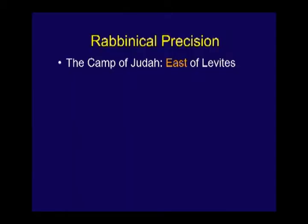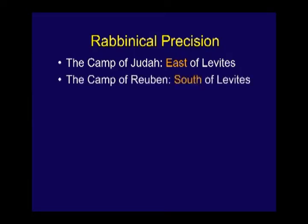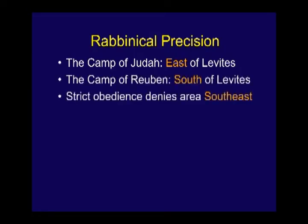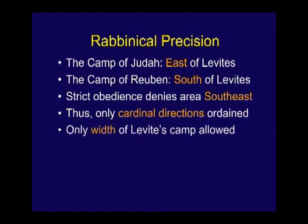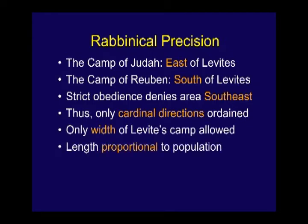The camp of Judah was east of the Levites; the camp of Reuben was south of the Levites. To be strictly obedient, that denies the area that's southeast — you're either east or south, you can't be southeast, because then you're neither south nor east. In other words, only the cardinal directions — north, south, east, west — are ordained in the Torah, and only the width of the Levites' camp would be allowed, with the length being proportional.